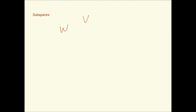We say that the subset W of a vector space V is called a subspace of V if W itself is a vector space under the addition and scalar multiplication defined on V. So it has the same operations of addition and scalar multiplication — same rules, same operations — and under these, it itself is a valid vector space.